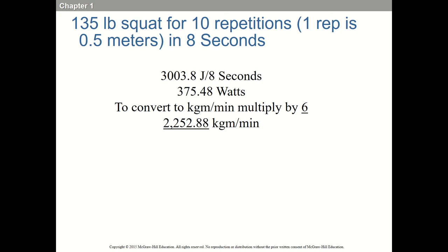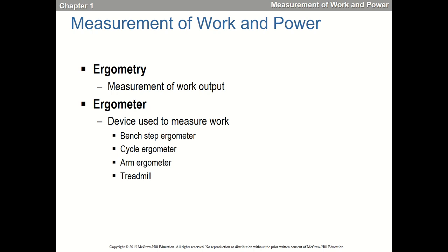Here — let's figure out some wattage. Same situation: 135-pound squat, but they do it in 8 seconds, moving relatively quickly. That's 3,000-odd joules in 8 seconds, which equals about 375.5 watts. To convert to kilogram meters per minute, you multiply by 6. Divide by 6 to go from kilogram meters per minute back to watts. This is a simple example, but with bikes you'll be doing a lot of this.